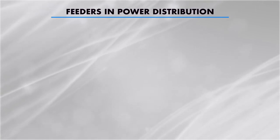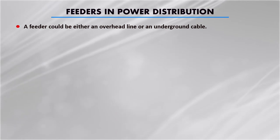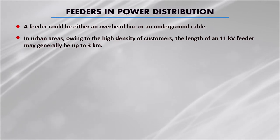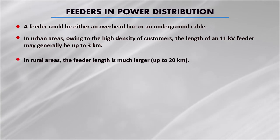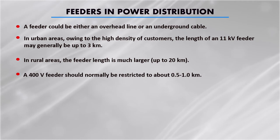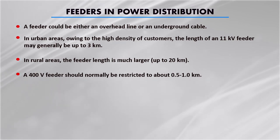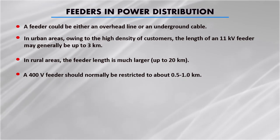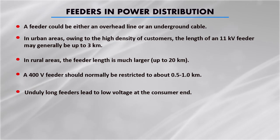In power distribution, a feeder could be either overhead lines or underground cables. In urban areas, due to high density of consumers, the length of an 11 kV feeder may generally be up to 3 km. In rural areas the feeder length is much larger, up to 20 km. The 400 volt LT feeder should normally be restricted to 0.5 to 1 km only, and unduly long feeders lead to low voltage at the consumer end.